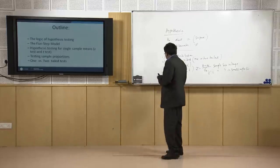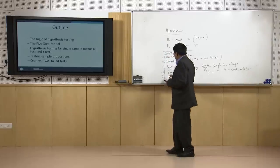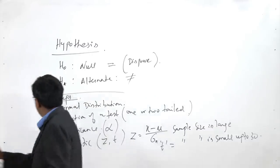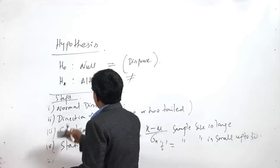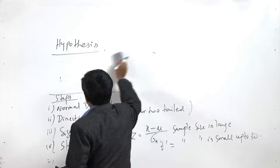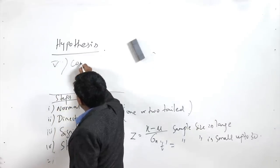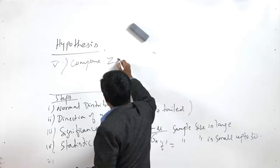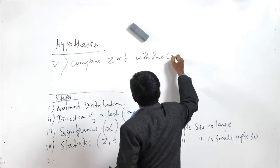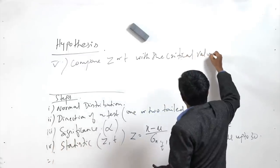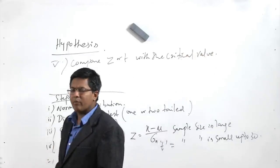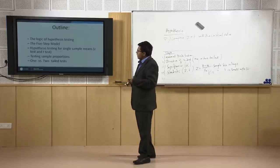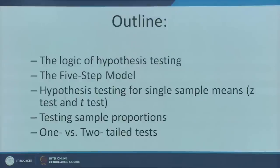Once you have calculated the statistic, the final step is to compare the Z or T statistic with the critical value. The critical value can be found from the Z or T table at the end of any statistics book, or you can simply look it up. This comparison tells you whether to reject or fail to reject the null hypothesis.